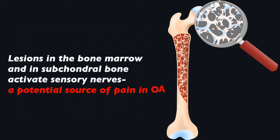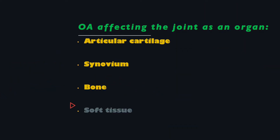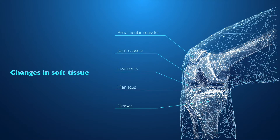Lesions in the bone marrow and in subchondral bone activate sensory nerves, a potential source of pain in OA. The soft tissue components of the joint, including the ligaments, the joint capsule, and in the knee, the menisci, are commonly also implicated in OA.